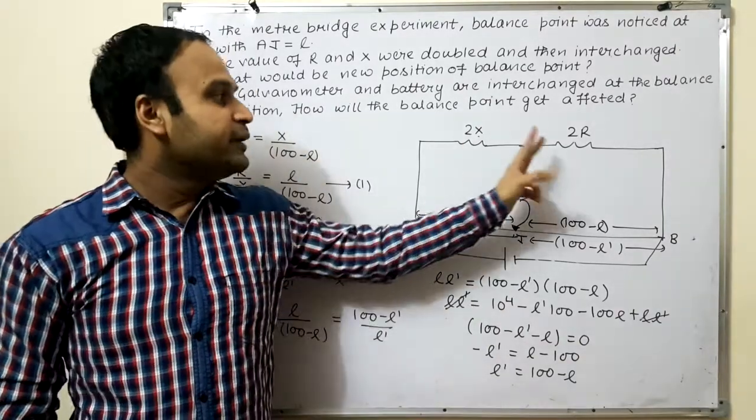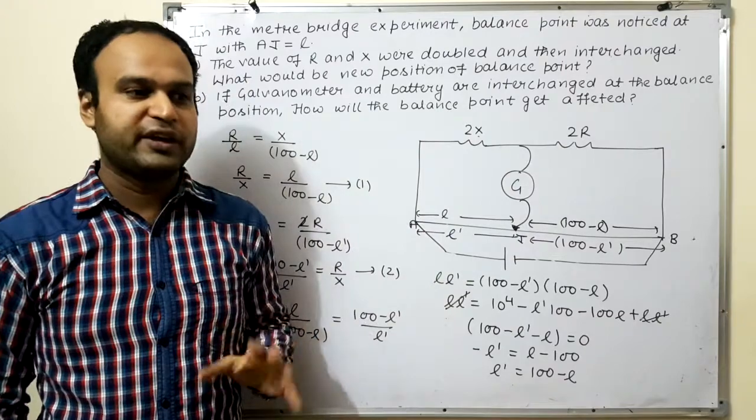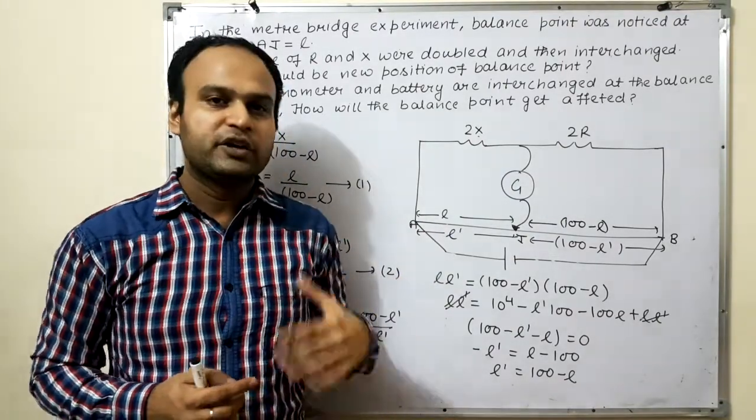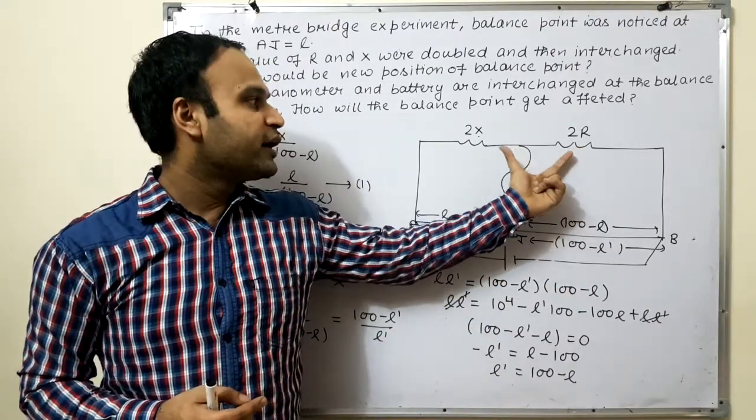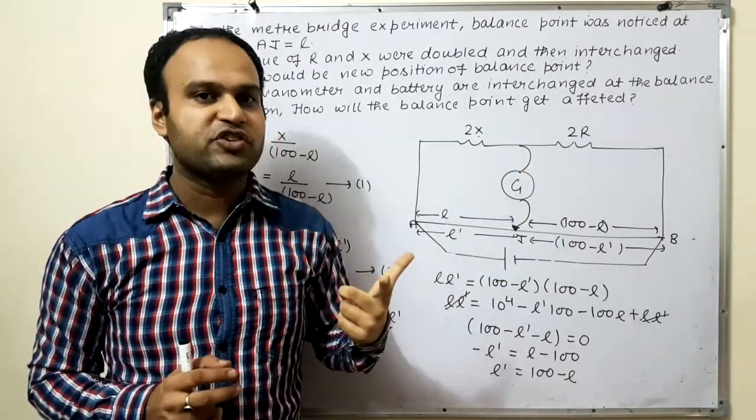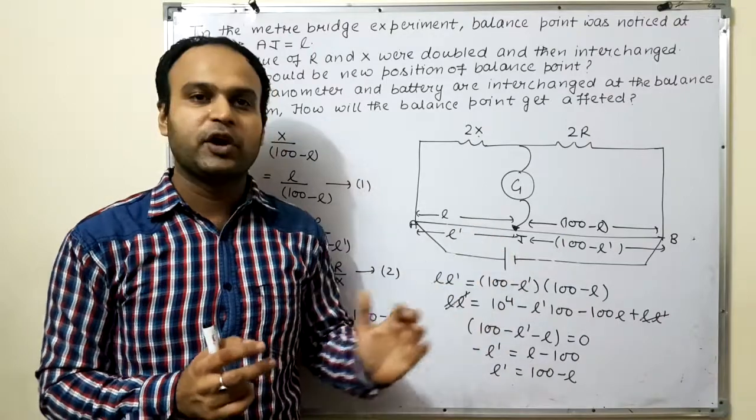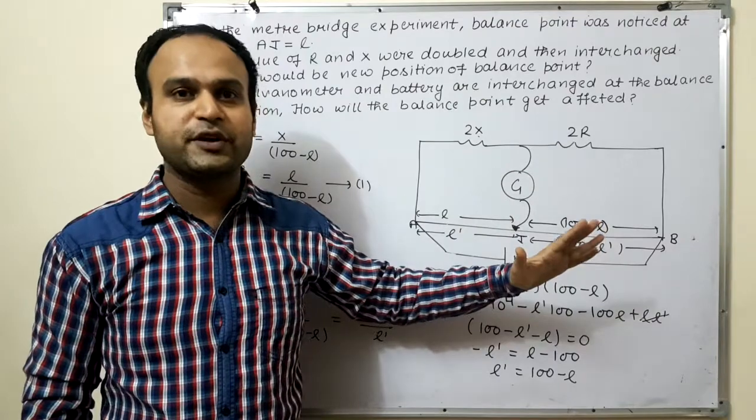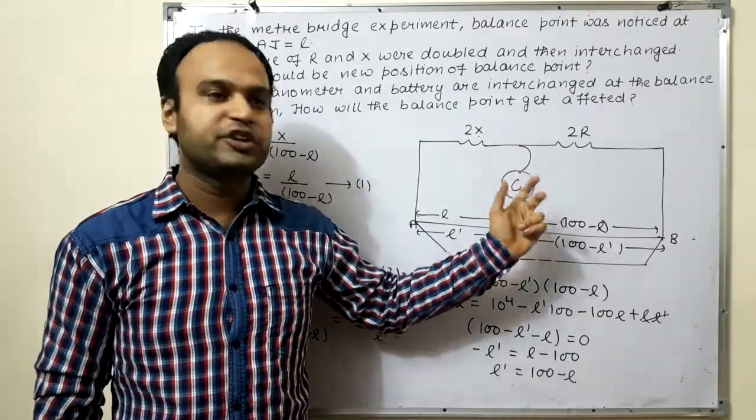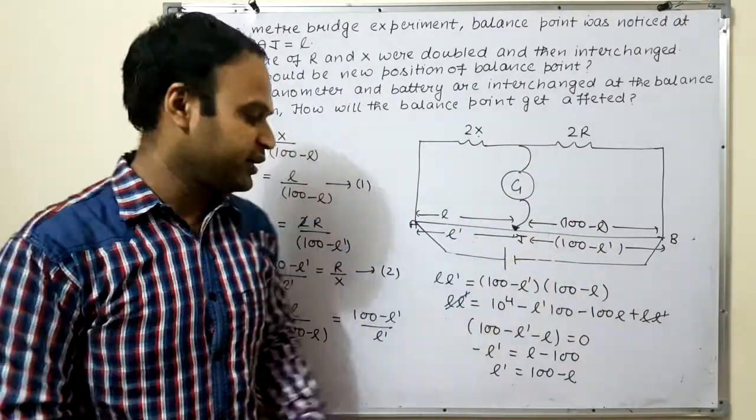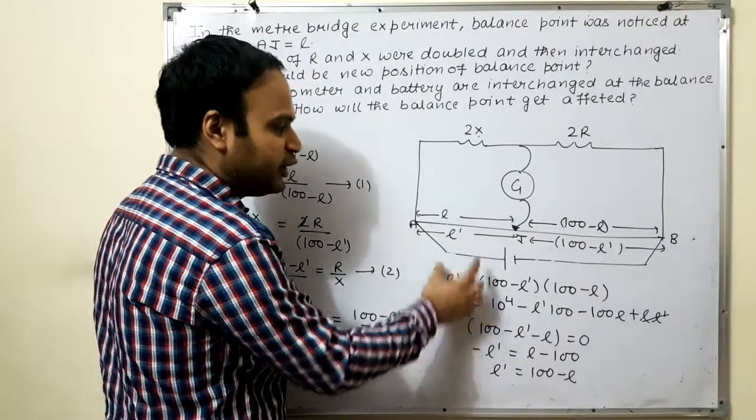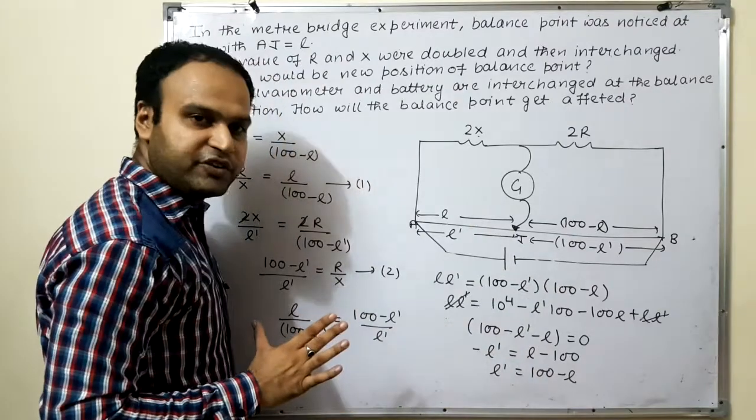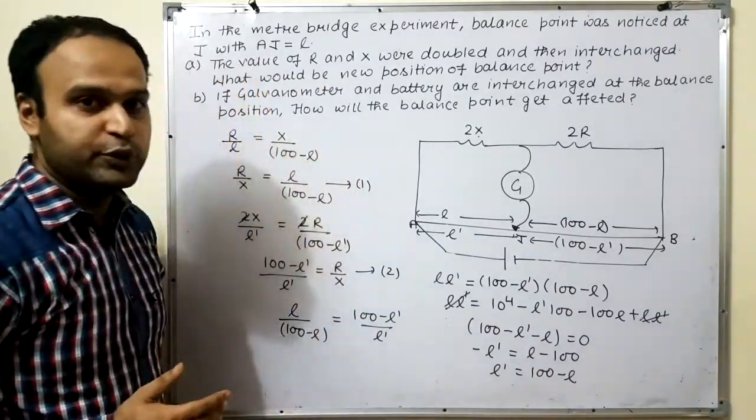If you notice carefully, I interchanged these two. Let me tell you a small concept, a shortcut. When you interchange the resistances, their lengths also get interchanged. Whether you double them, triple them, or quadruple them. When you interchange, then their lengths also interchange. So L dash value is hundred minus L, means this part shifted here. This is the position of the new balance point. Clear?